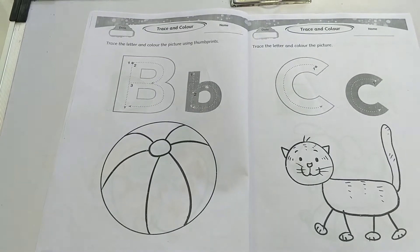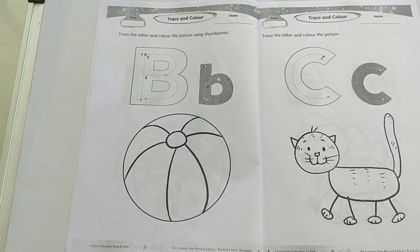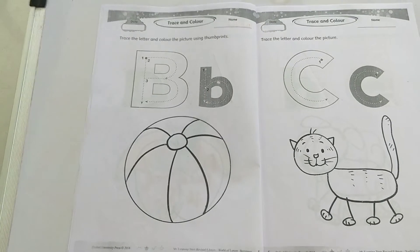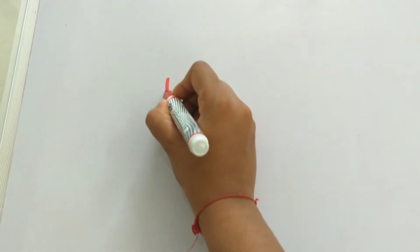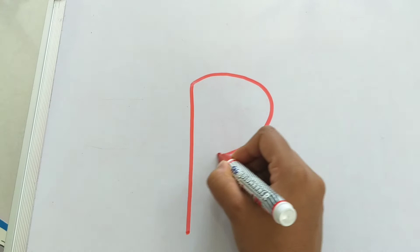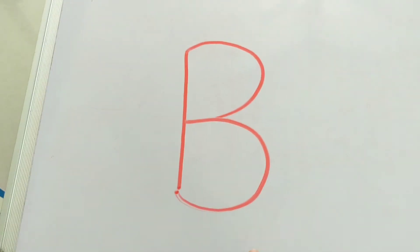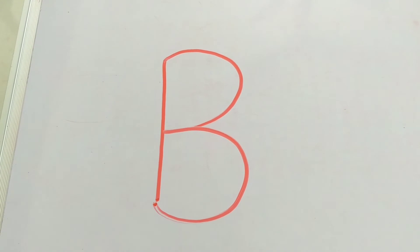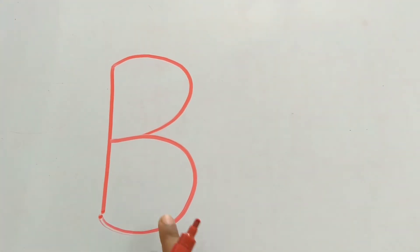Alphabet letter B. Before starting page number 5, I will tell you how to write the letter B. One standing line, one backward curve, and another backward curve. This is the letter B. It is capital B.